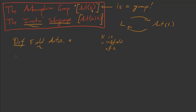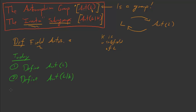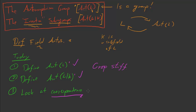Those are our three goals for today: first, define Aut(L); second, define Aut(L|K); and third, take a quick look at this correspondence between subfields and subgroups. We won't see the whole correspondence today, but we'll see roughly half of it.